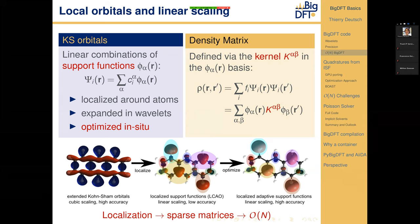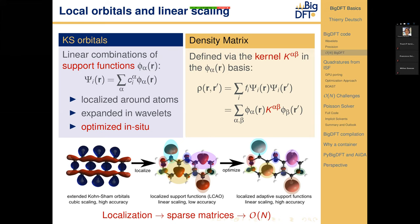The density matrix is expressed according to these support functions with a kernel K_{αβ} matrix. Since the support functions are located around atoms, their overlap is only between neighboring atoms, so the density matrix is sparse. We have local quantities to compute using our compact support wavelets and sparse matrices to manipulate or invert, enabling a linear scaling method. A considerable advantage is that we optimize these support functions during the calculation to reach the same precision as the cubic scaling code.